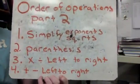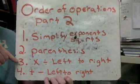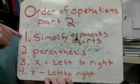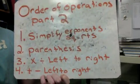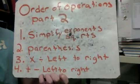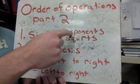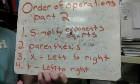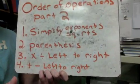For part 2 of order of operations, we are going to add something to our steps: parentheses, multiply and divide from left to right, and add and subtract from left to right. We're going to add in simplifying exponents and square roots. Simplifying exponents and square roots just means changing them from a number with the square root over it, or a number with an exponent, to a regular old number.